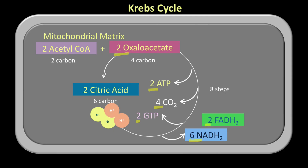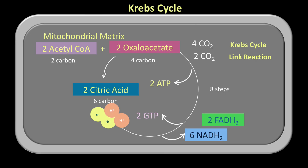By the end of the Krebs cycle, apart from oxaloacetate being regenerated in the mitochondrial matrix, we get six molecules of NADH2, two FADH2, two ATP, two GTP, and four CO2. Combined with the two CO2 from the link reaction, we have a total of six molecules of carbon dioxide — all the carbon dioxide that had to be released during respiration. This means glucose is completely oxidized by the end of the Krebs cycle.